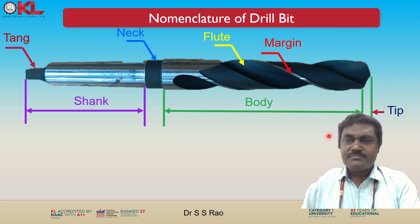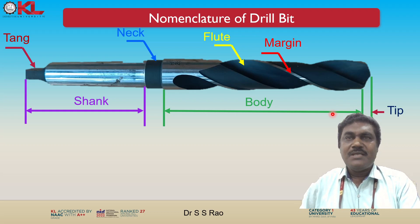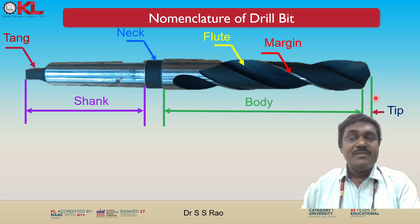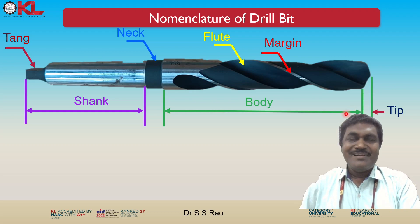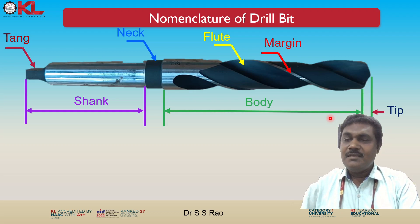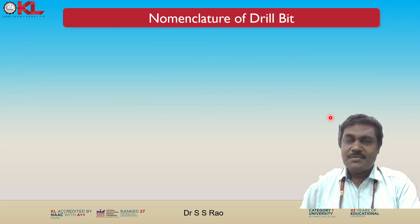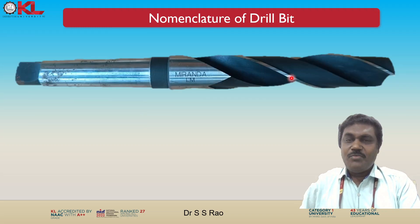Now the tip portion. The tip, also known as the drill bit's cutting edge, is the foremost point of the drill bit. It is responsible for making initial contact with the workpiece and initiating the drilling process.